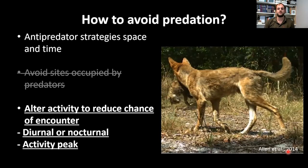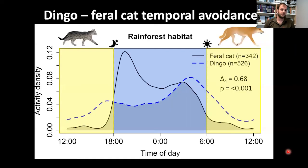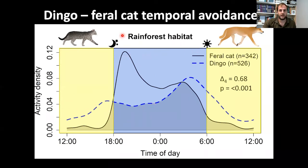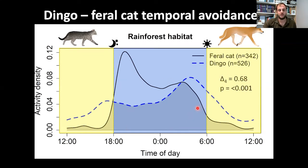Since cats aren't spatially avoiding dingoes, I investigated whether they alter their activity patterns. I generated kernel density activity curves where the area under the curve represents independent detections at a given time of day — midnight is in the middle, blue is nocturnal, yellow is diurnal. All data are from rainforest habitat only. Feral cats are the black line, increasing at dusk, declining through the night with a small pre-dawn peak, and largely inactive during the day. Dingoes are less active early in the night, peak before dawn, and are more diurnal overall. Overlap between the two species is 68%, indicating both are predominantly nocturnal.